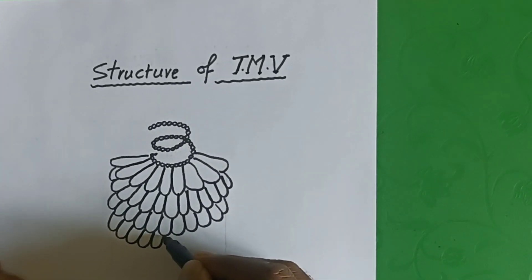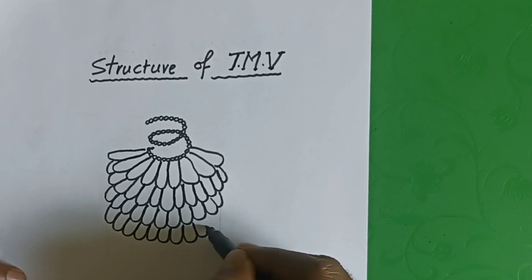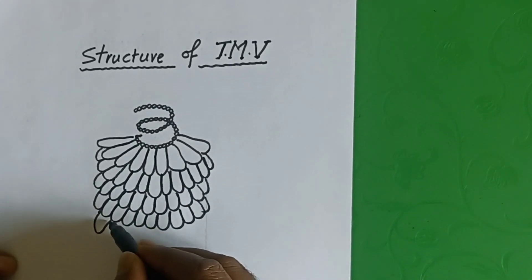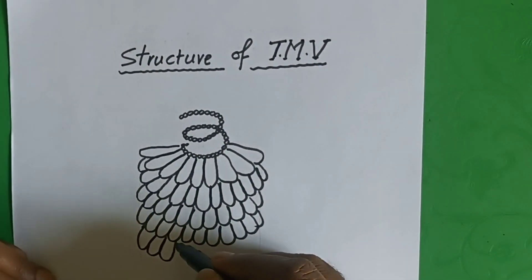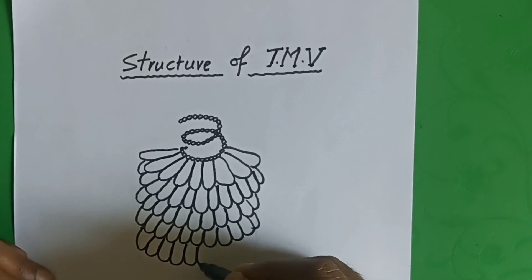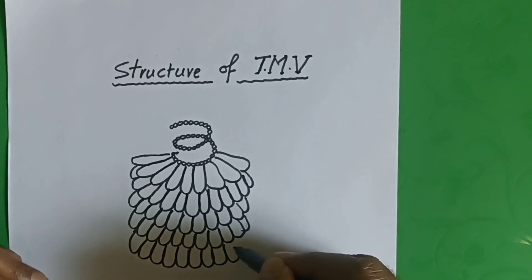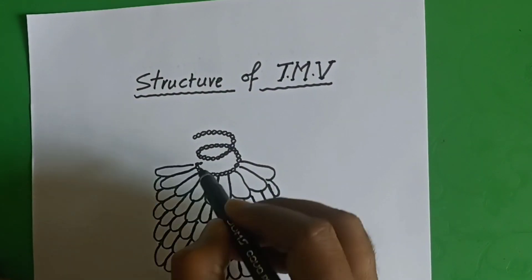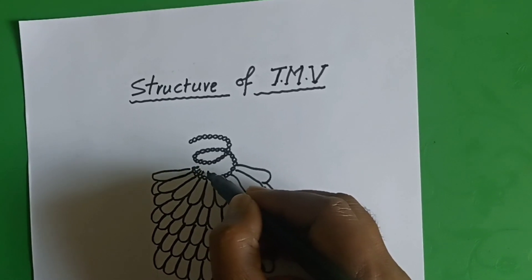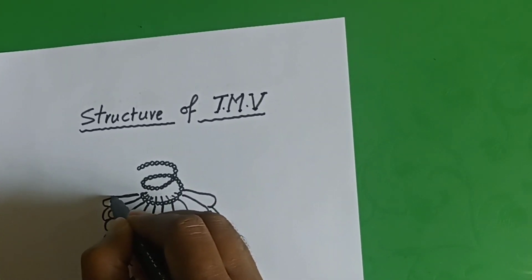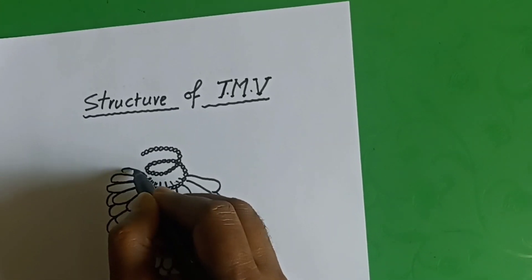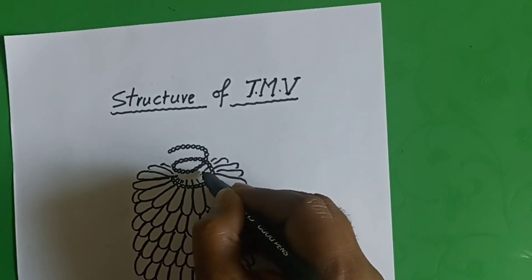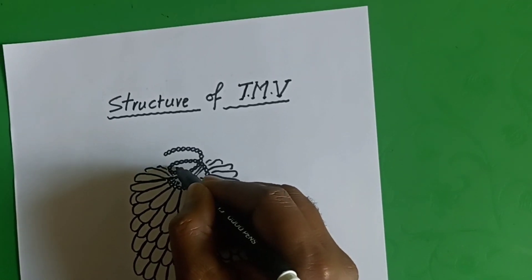When you see the diagram it looks very difficult or complex, but when you try to draw it, it is very easy. Just follow the video to draw this diagram. I hope you understood the concept and how to draw this diagram. Practice well — almost completed. Just draw like this, finished.